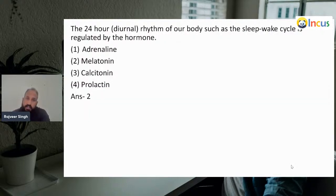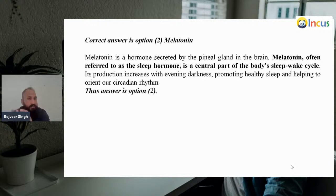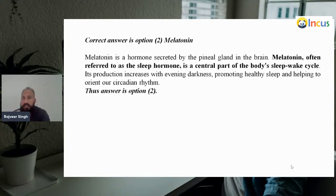Next: in the 24-hour diurnal rhythm of our body, such as the sleep-wake cycle, which hormone is responsible? Adrenaline — wrong. Melatonin — yes. Calcitonin — also wrong. Prolactin is connected with milk production. So our answer will be melatonin. Melatonin is a hormone secreted by the pineal gland in the brain, often referred to as the sleep hormone. It is a central part of the body's sleep-wake cycle. Its production increases with evening darkness, promoting healthy sleep and helping to orient our circadian rhythm.